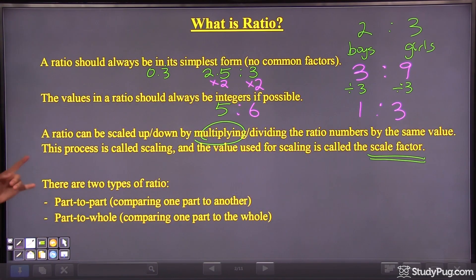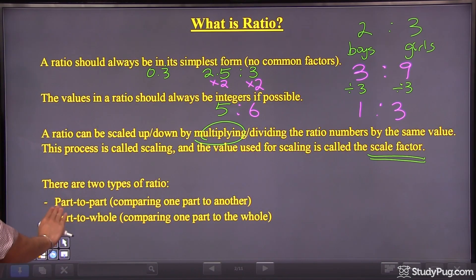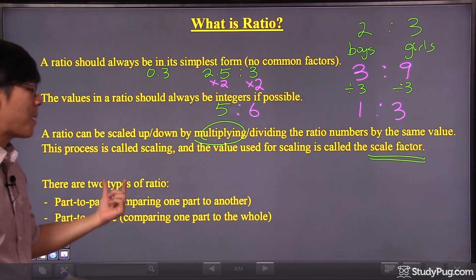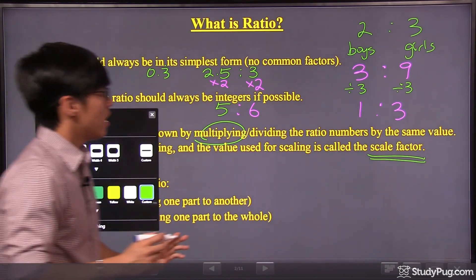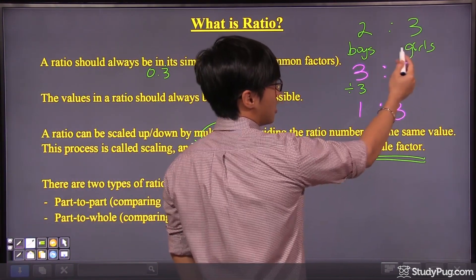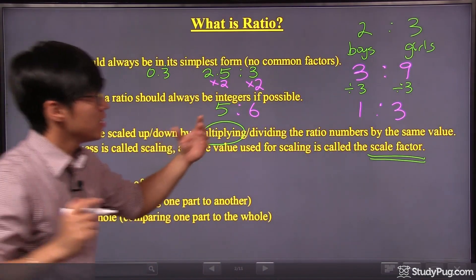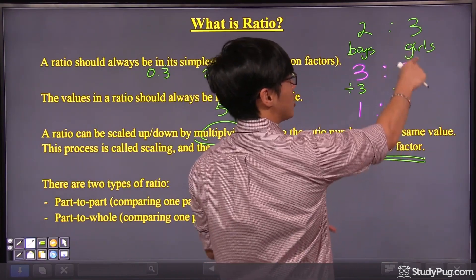Now, last one. Typically, there are two types of ratios. First one is called part-to-part, meaning that we're comparing one part to another. Let me give you an example. Back to here, we have boys versus girls. If each of them is called one part, boys and girls.